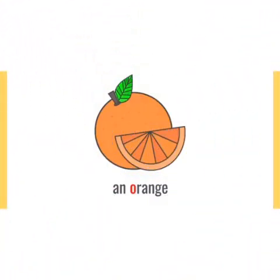Kids, what is this? Yes, orange. Do you like orange? Yes. Good. Which is the vowel? O. Okay. What should we write? Yes, AN. Kids, why do we use AN? Orange starts with the vowel O. So we should use AN. AN orange.